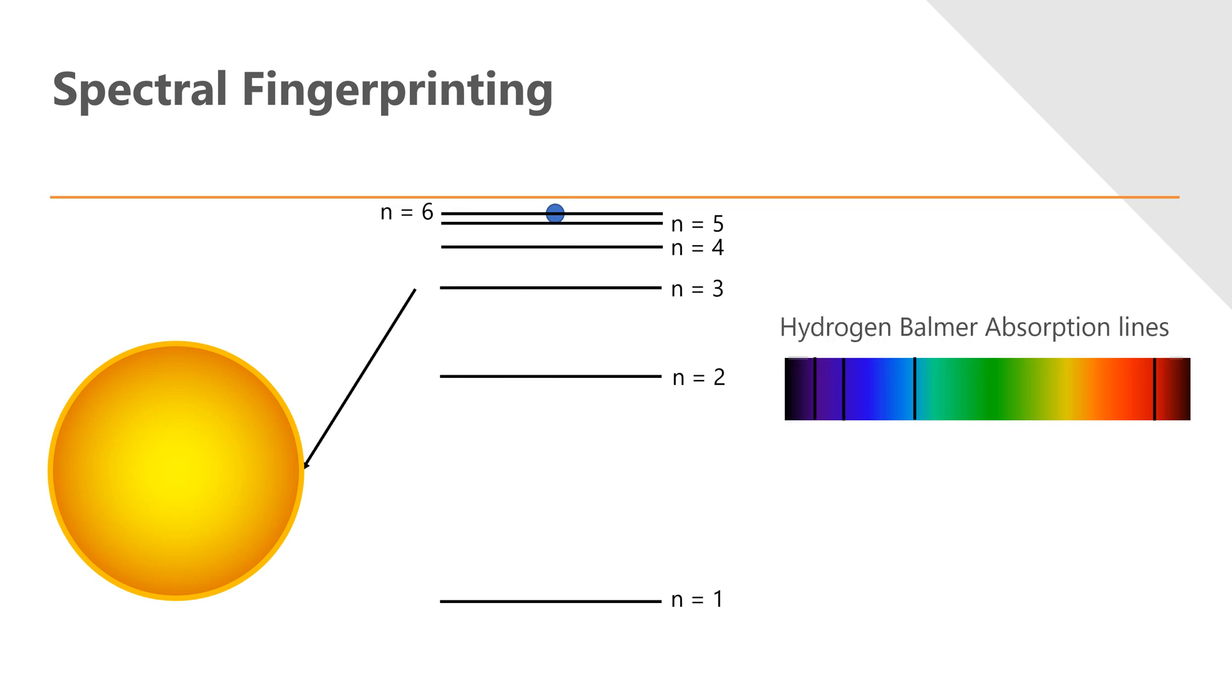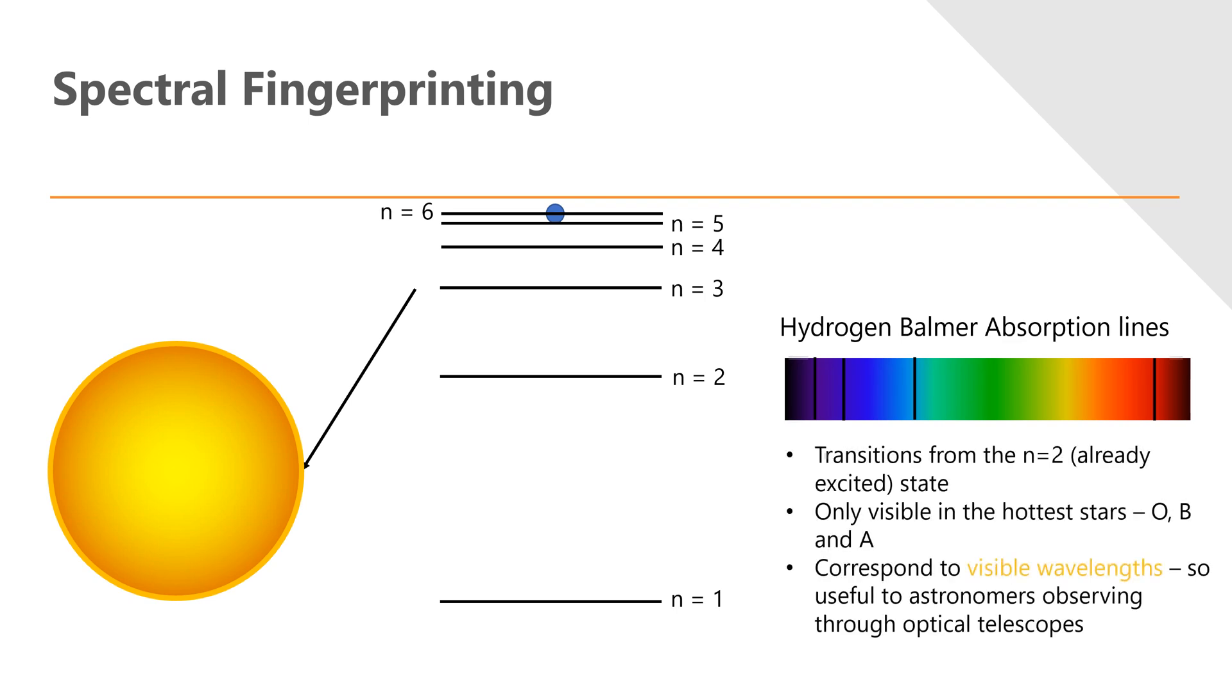These absorption lines are called hydrogen Balmer absorption lines, and they are caused by transitions from the n equals two already excited state. We only see these in the hottest of stars - O, B, and A - because they're the only ones with the temperature necessary for that hydrogen to be able to exist in an excited state. And they are more prominent in O class stars than in A class stars because there's more already excited hydrogen.